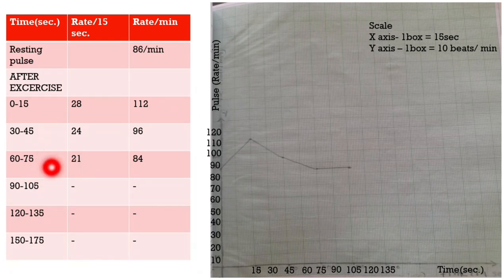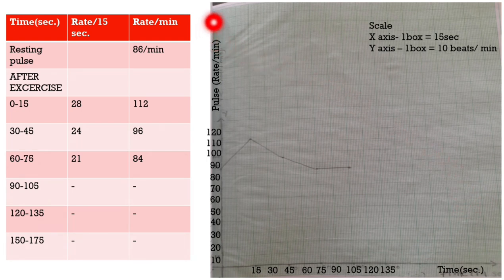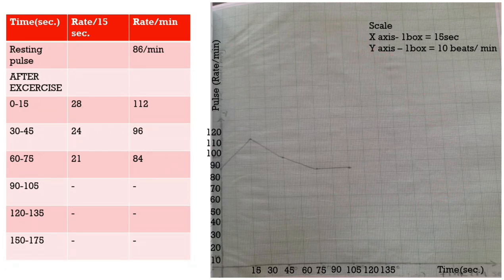Since we had reached just below the resting pulse rate, we fully collected the data. Now we are going to plot it as a graph. The x-axis represents time in 15-second intervals, and the y-axis represents pulse rate per 15 seconds. From the data, we simply plot the points. Don't forget to write down the scale at the top of the graph, and connect the points.